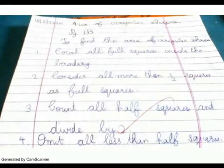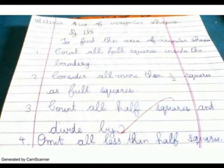Mass area of irregular shape, page 135. To find the area of an irregular shape: 1. Count full squares inside the boundary. 2. Consider more than half a square as a full square. 3. Count exactly half squares and divide by 2. 4. Ignore squares less than half.